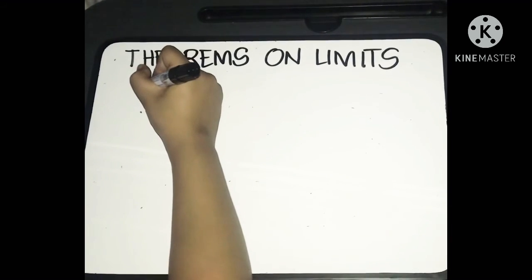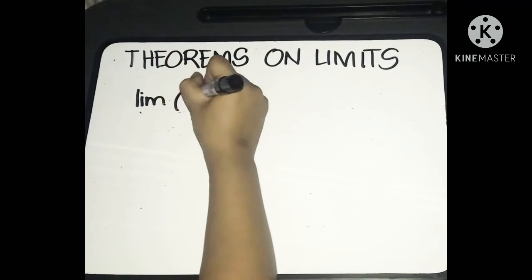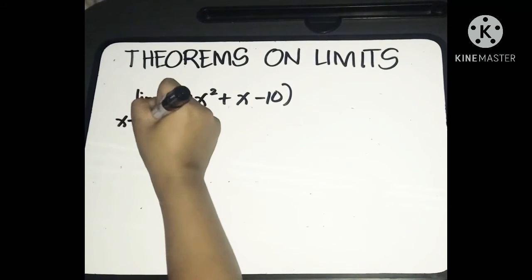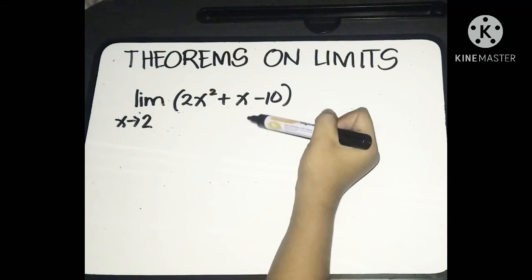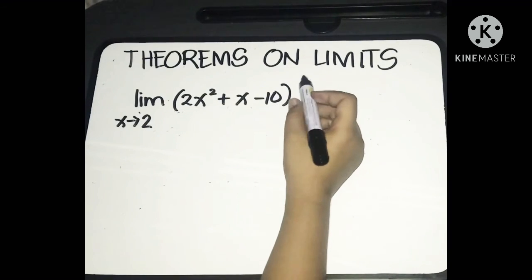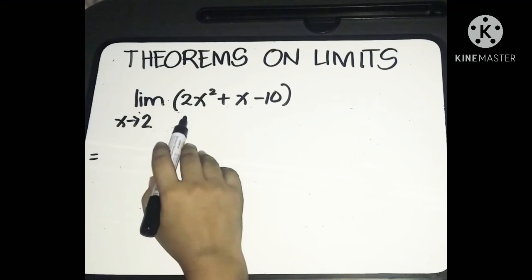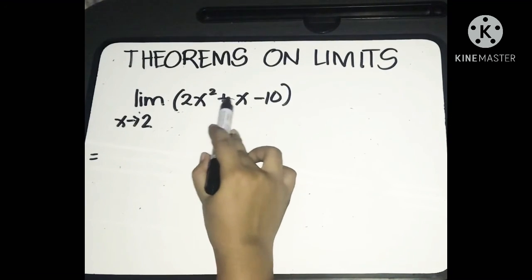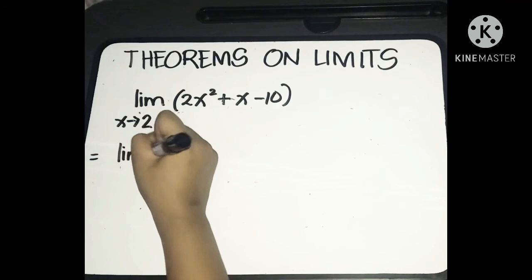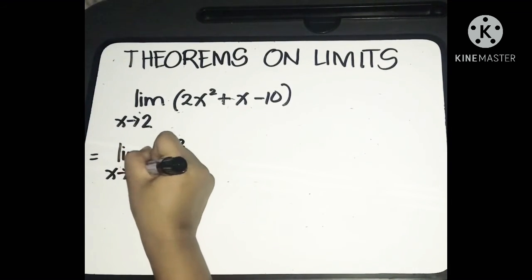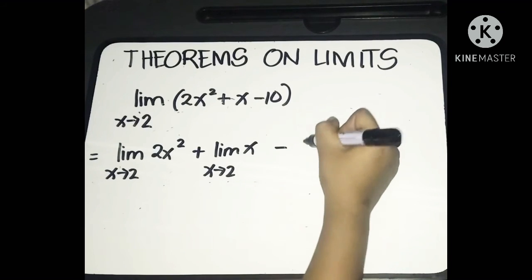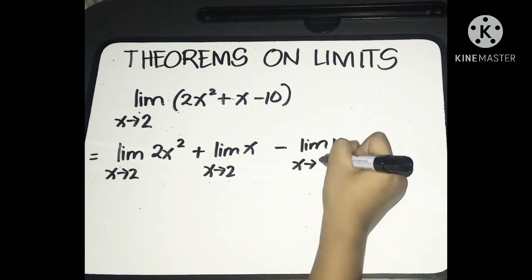Let's have the next example: the limit of (2x² + x − 10) as x approaches 2. Applying those theorems, we distribute the limit over addition and subtraction: the limit of 2x² as x approaches 2, plus the limit of x as x approaches 2, minus the limit of 10 as x approaches 2.